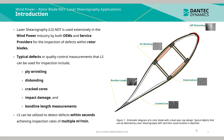Typical defects or quality control measurements that laser shearography can be used for inspection include ply wrinkling, disbonding, crack causes, impact damage, and bond line length measurements. Laser shearography can be utilized to detect defects within seconds, achieving inspection rates of multiple square meters per minute.